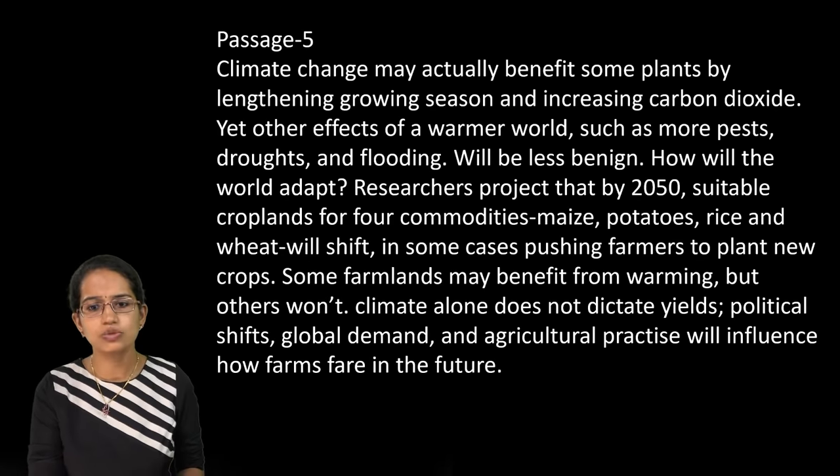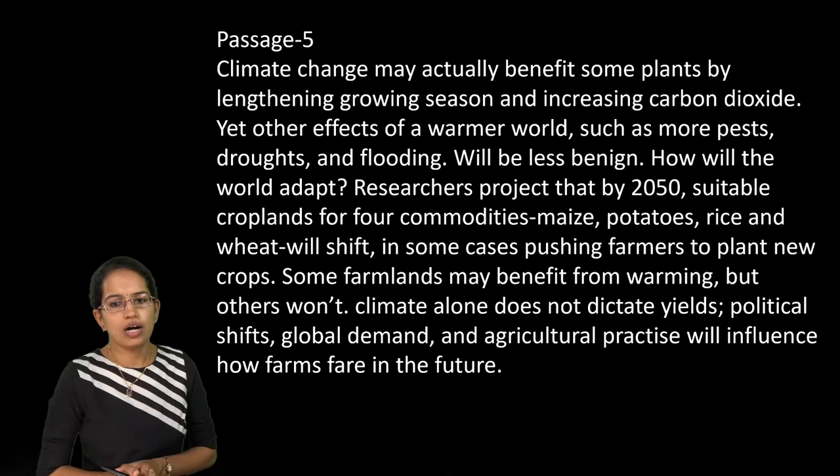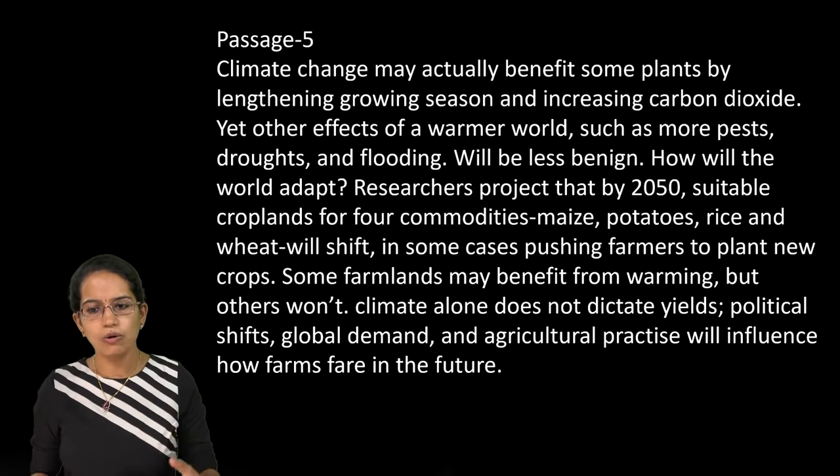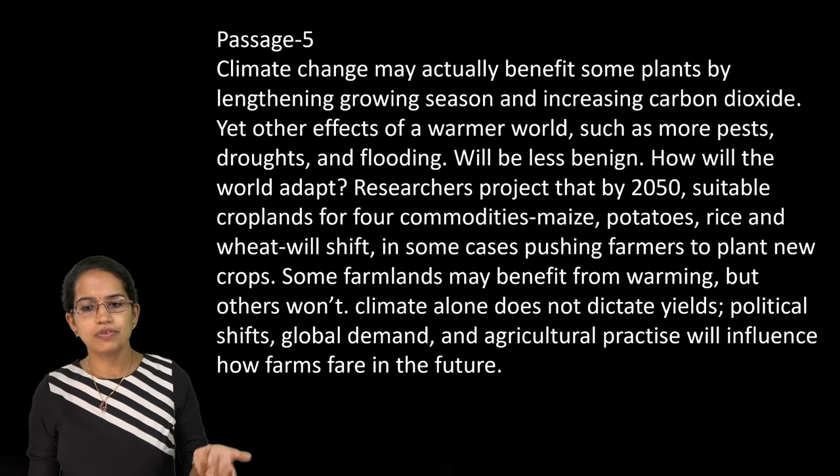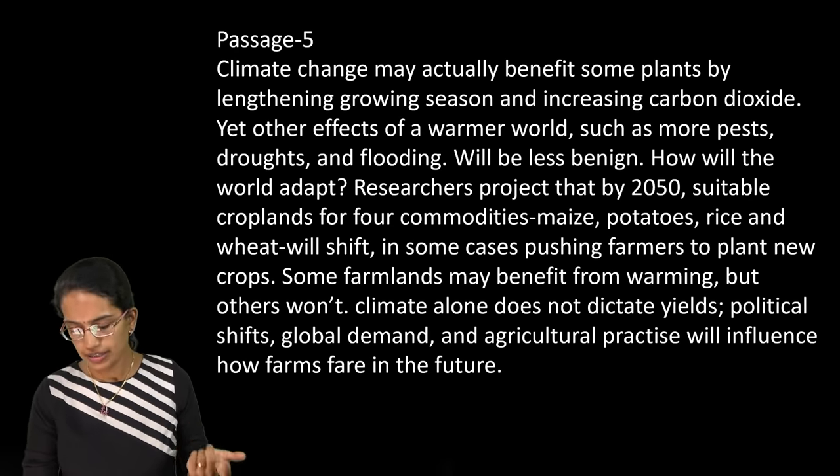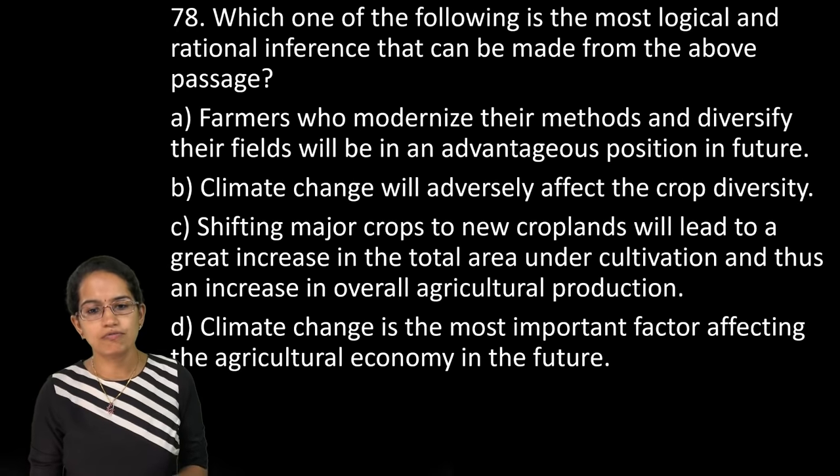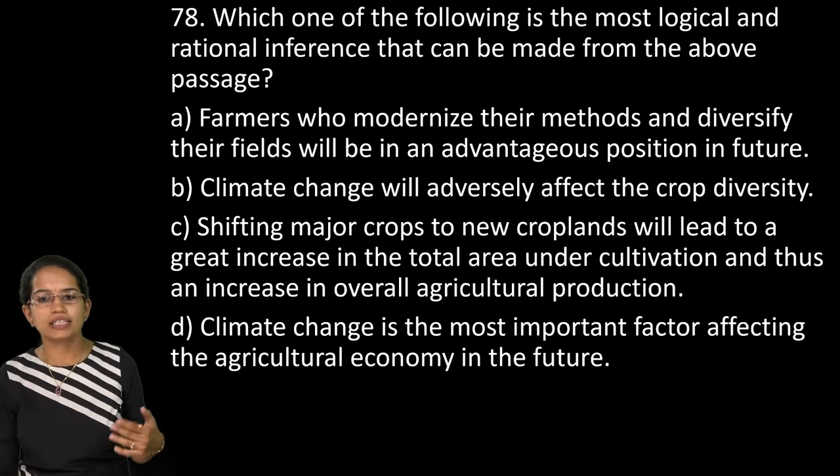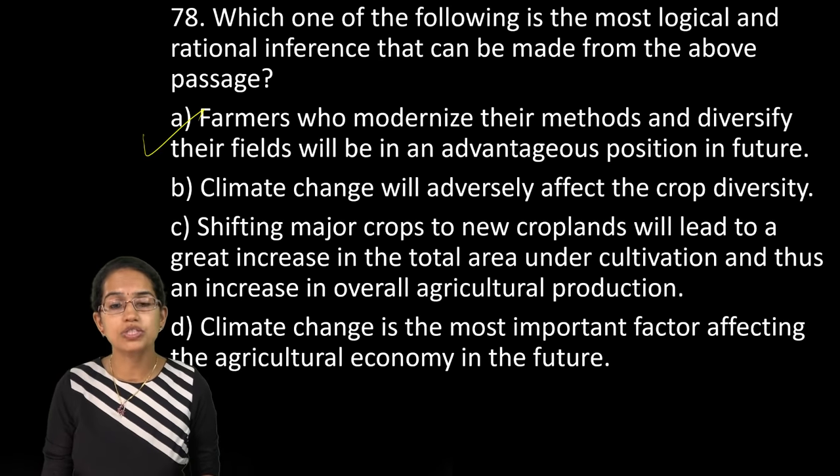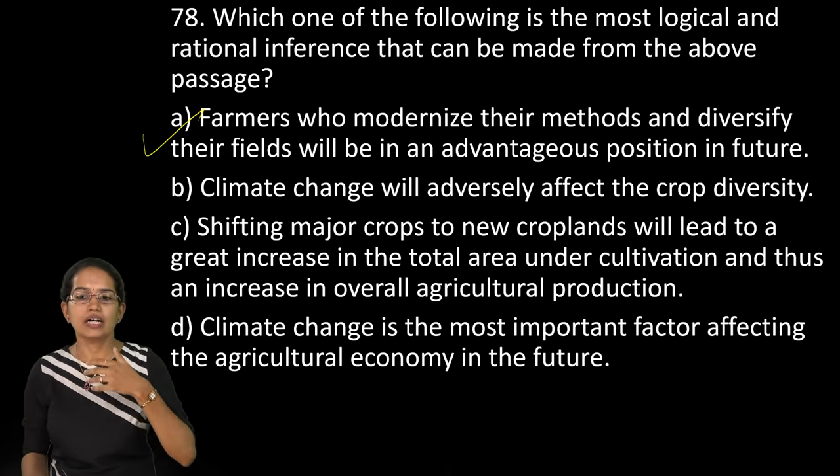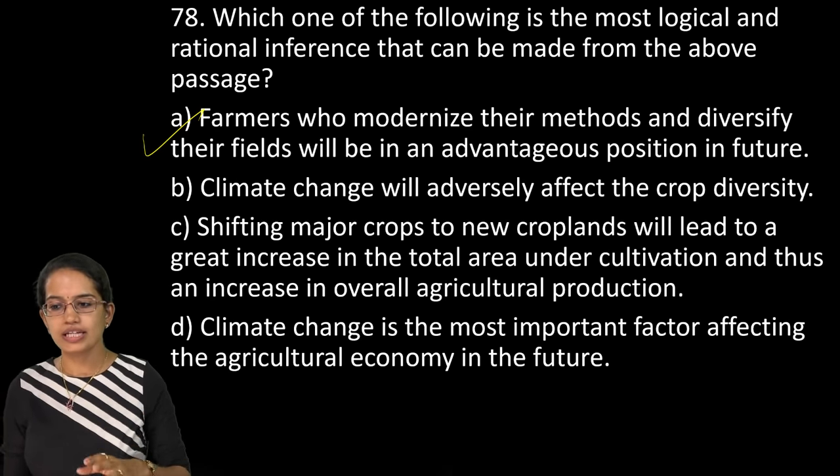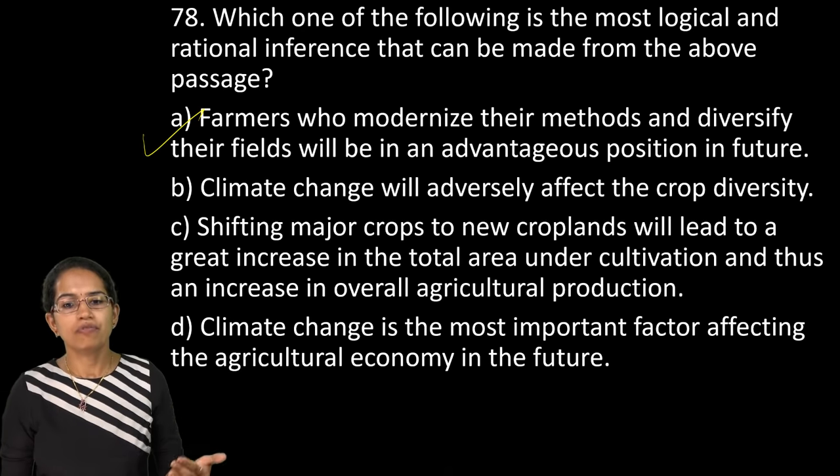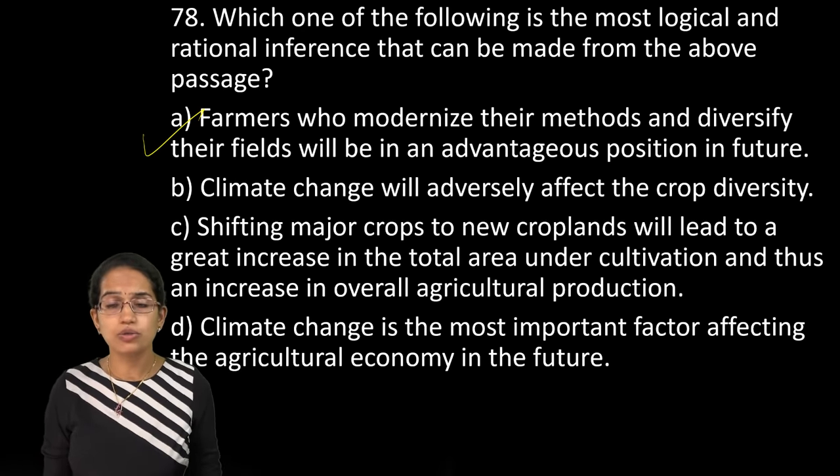The next question talks about climate change. So it talks about how we have seen over the years the things have changed. The farmlands may benefit from warming and some may not. So there are different crops depending on the pattern they might or might not benefit. So what could be inferred from the passage. Farmers who modernize their methods and diversify could be in a good position because of climate change. You could have certain crops that could thrive well, certain crops that could not thrive well. So the agricultural practices need to be in line with the change and that could be brought about by diversification.